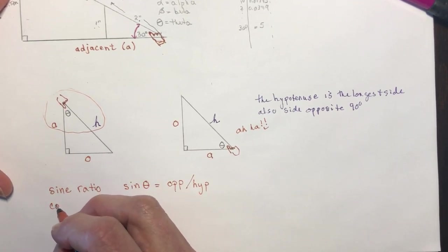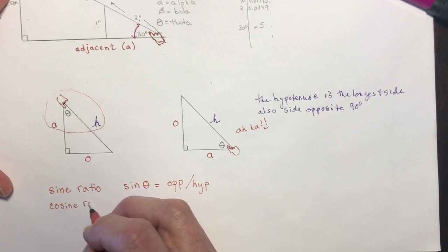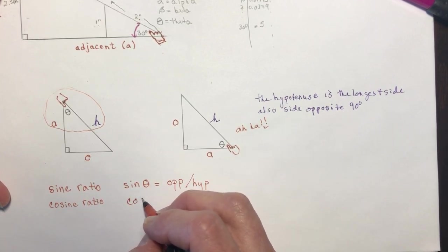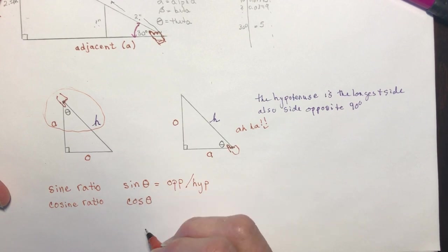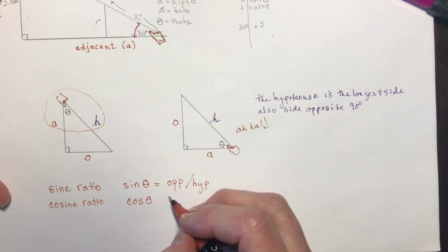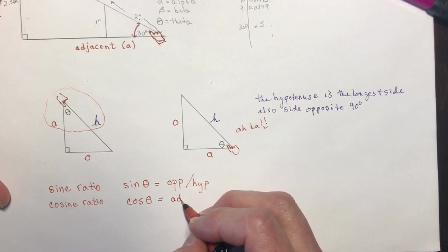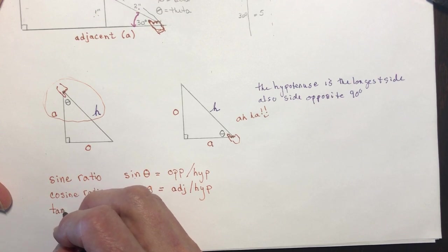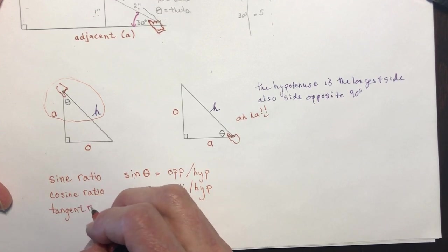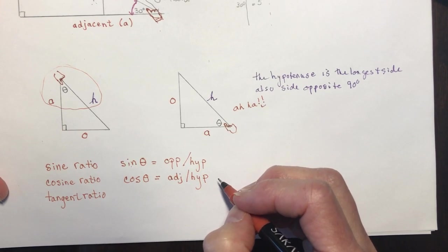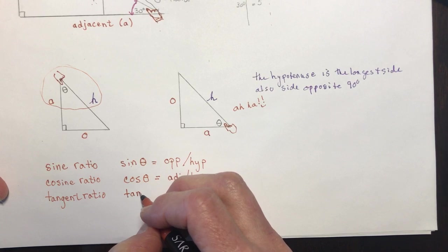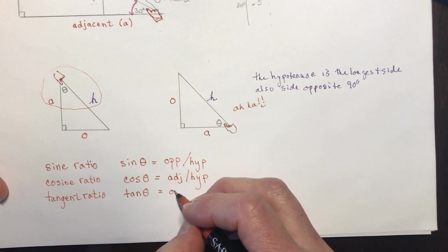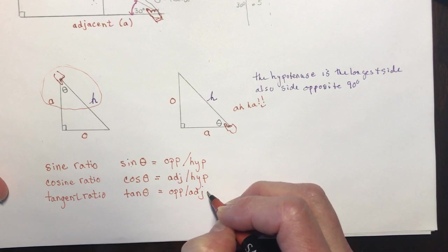The next one is the cosine ratio — cos theta. Don't say 'cos' like sin — there's no sin in math. It's cosine theta, and cosine theta is the adjacent side over the hypotenuse. The third ratio is the tangent ratio — tan theta, which means tangent theta — and that is the opposite over the adjacent. So now we have all three primary trig ratios: sine, cosine, and tangent.